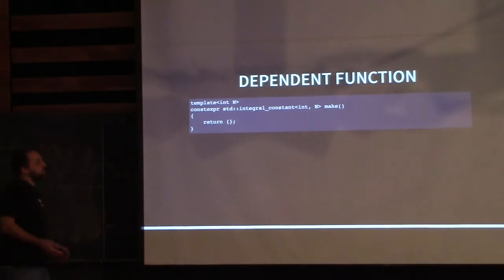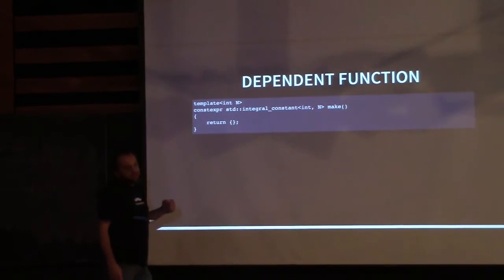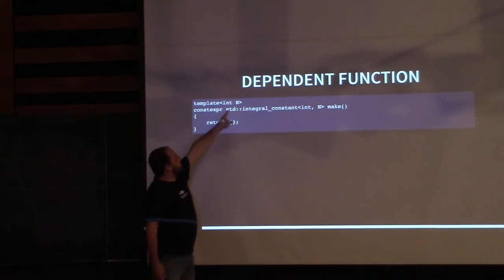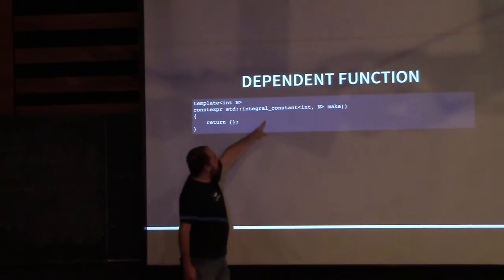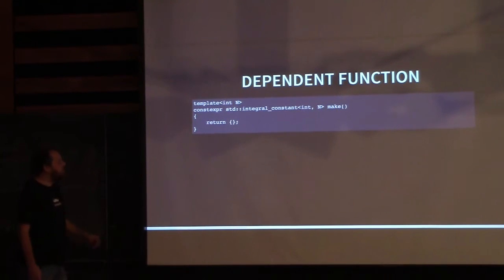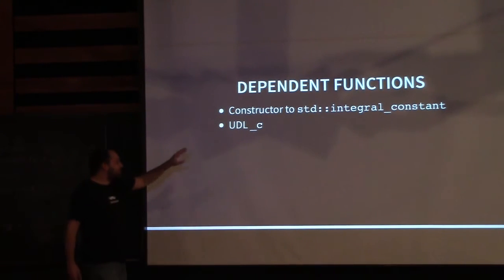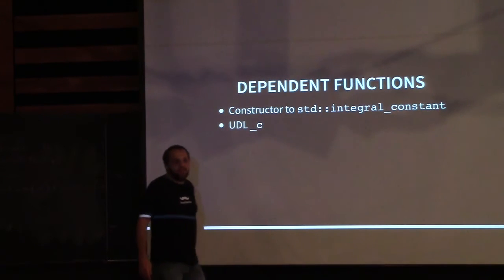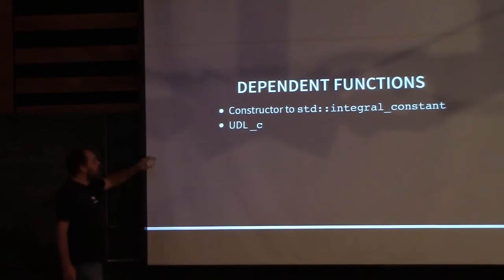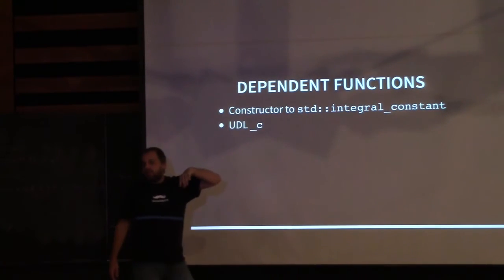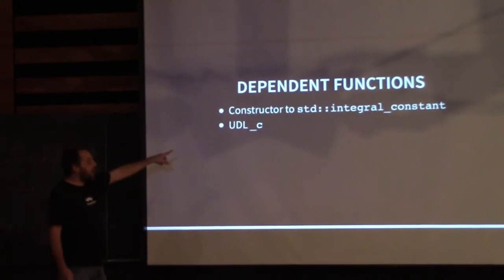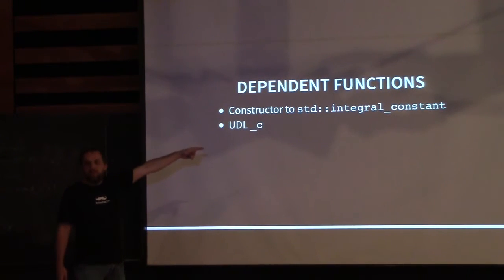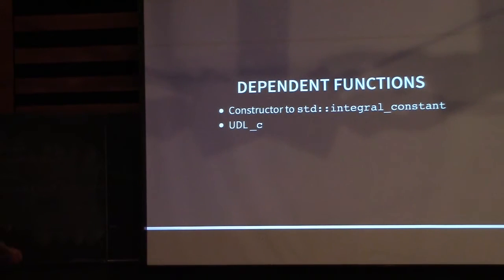To define a dependent function, we could define something like a 'make' function that takes a compile-time value and creates a different type depending on what that value is. The constructor to integral_constant would be in the same vein — and user-defined literals like Boost HANA's underscore-c essentially take a compile-time value and return the type for the integral constant. It's a much terser syntax than writing out the whole std::integral_constant.